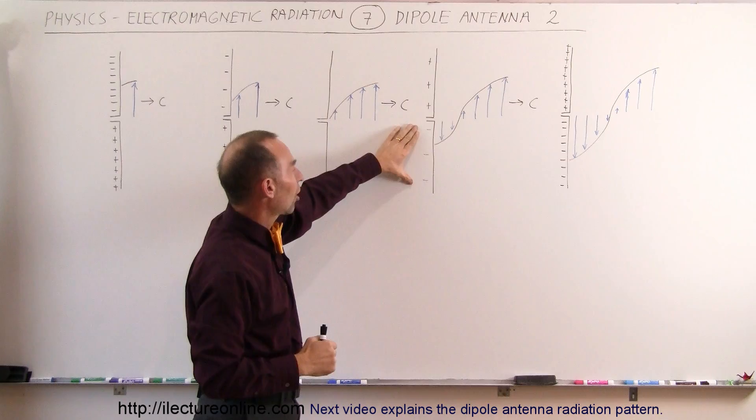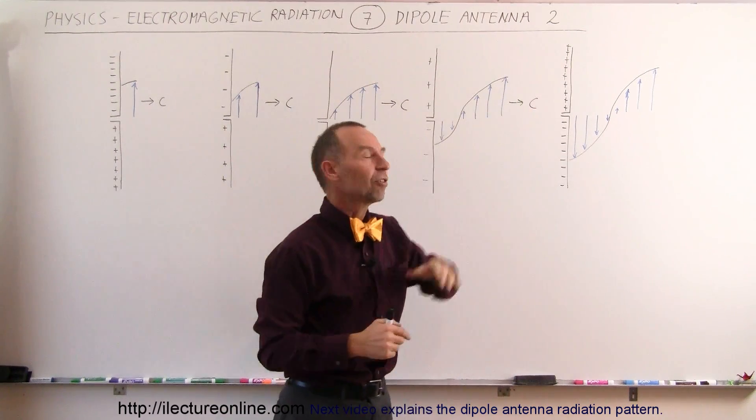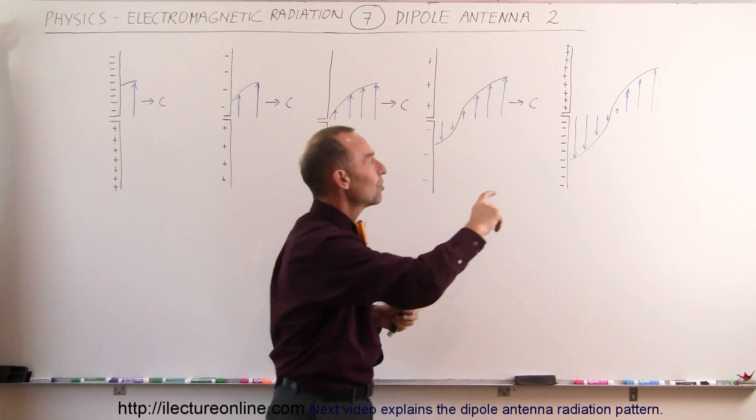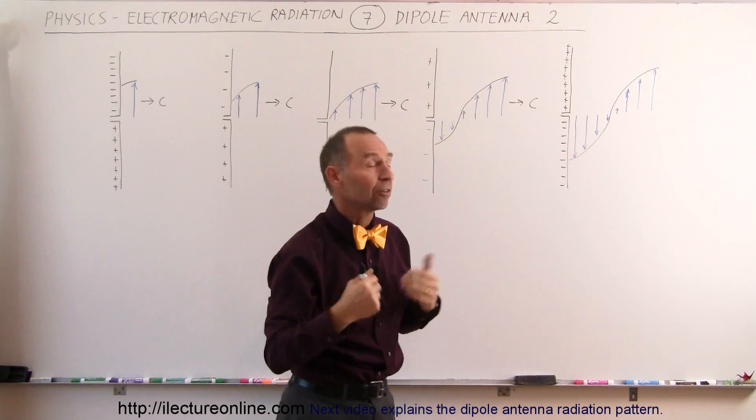Notice that the charge just continues to increase, more and more negative charge to the bottom, more positive charge at the top, the electric field strength continues to increase and reaches the maximum value when the maximum charge is distributed across the dipole antenna.